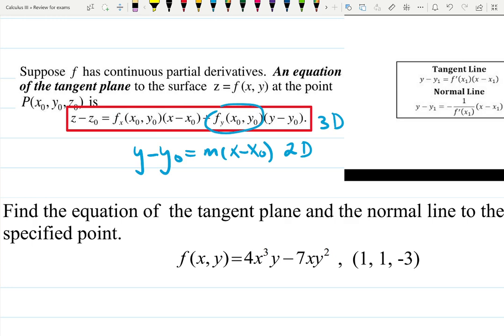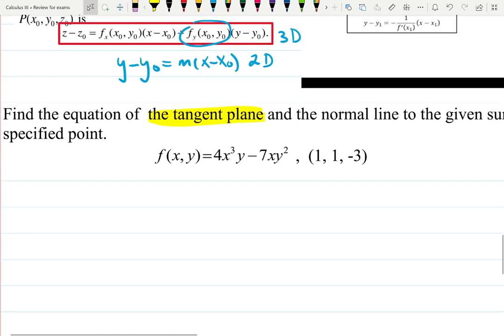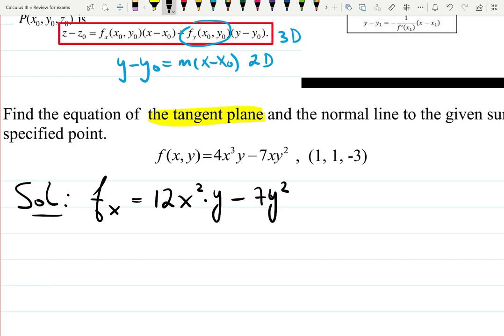When they ask us to find the equation of a tangent plane to the given surface at the given point, you need to find first partial derivatives. Let's do that. Partial derivative, in this case of the function f, with respect to x will be, x is a variable, y is a constant, gives you 12x times x squared times y minus x is a variable, so gives you 1, but 7y squared is a constant, multiply by x, so it stays.